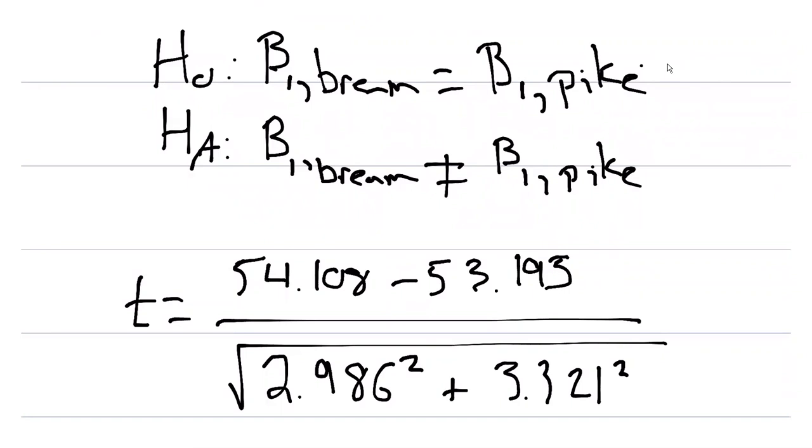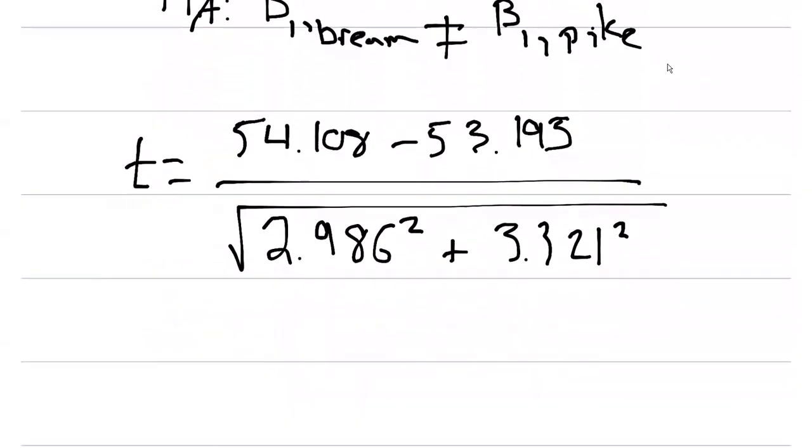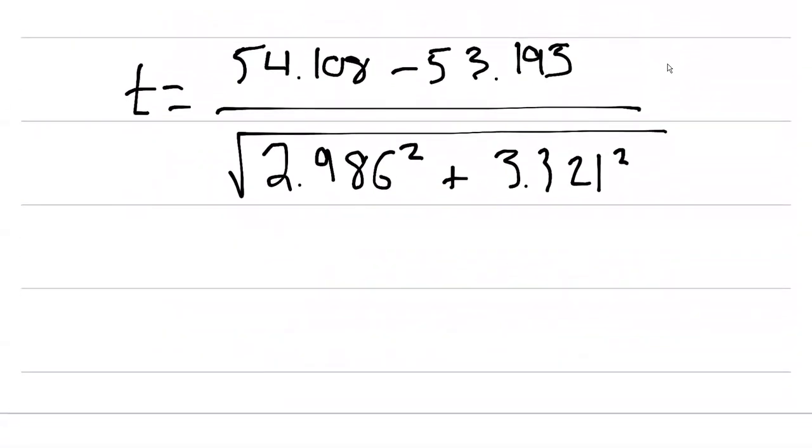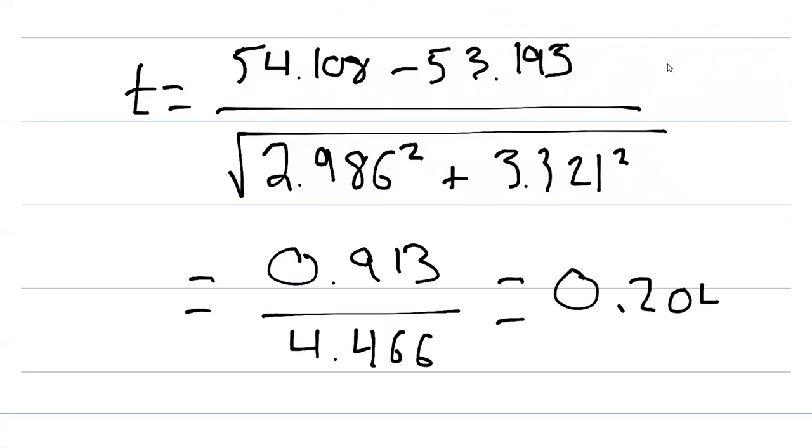Then we'll square that. That's our value of t. Once we do that we'll get 0.913 divided by 4.466, and when you divide those two values you'll get 0.204.